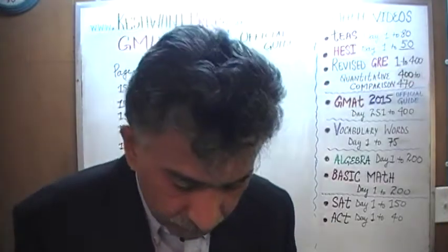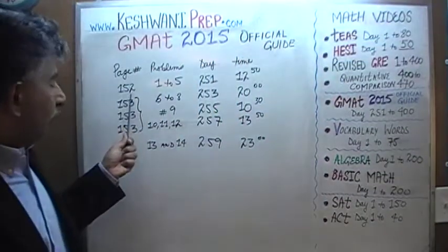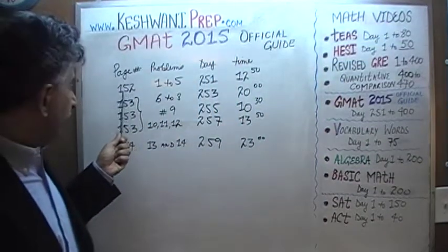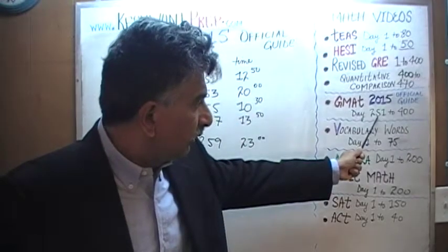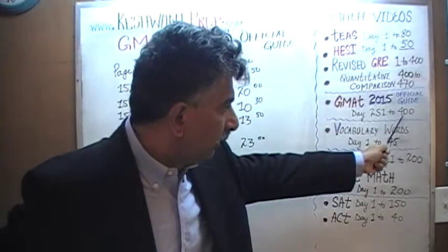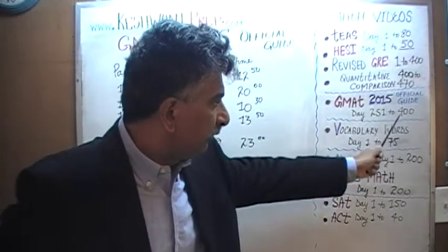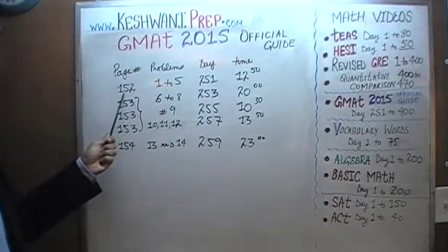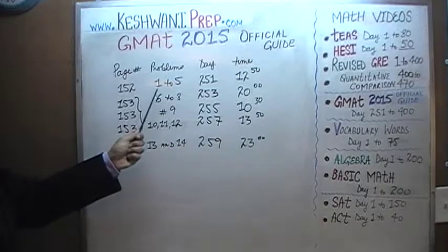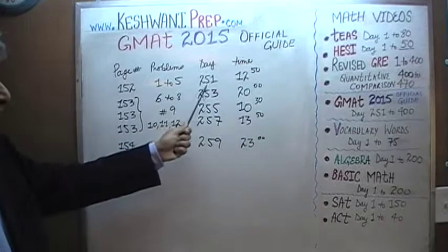The story begins on page number 152. You will find the solutions to all the problems from day number 251 through 400 of the GMAT 2015 official guide. Let's get going. On page 152 you will find problem numbers 1 through 5. You will find the solutions to those 5 problems on day number 251.